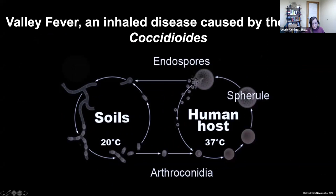These arthroconidia get swept up into the wind and inhaled by mammals — all sorts of mammals, but the focus here is humans. Once they're in the human body, they use cues like temperature to transition into other spore forms like spherules and endospores. These go on from the lungs, and in some unlucky individuals they go on to colonize the spine and also the brain, and people can die. People do die from valley fever — it's a very serious infection.